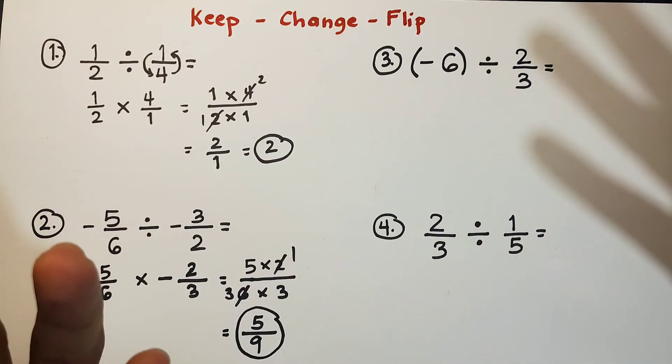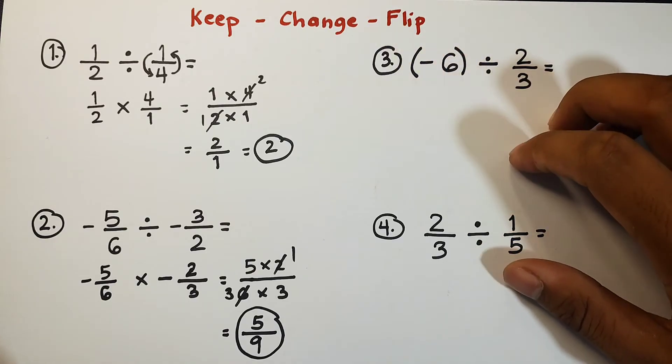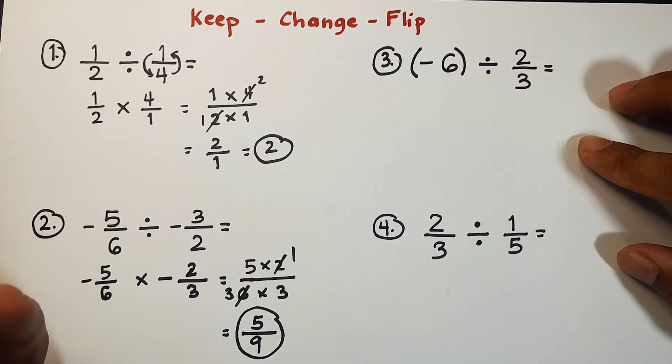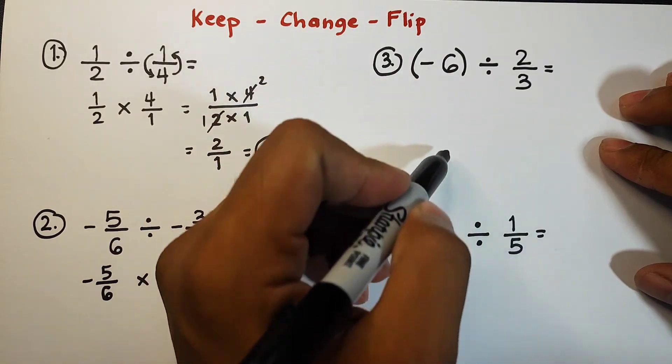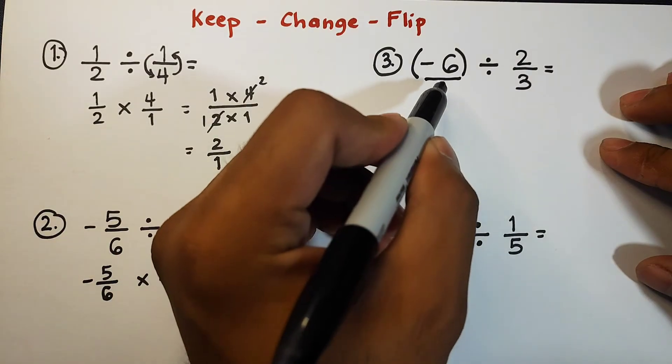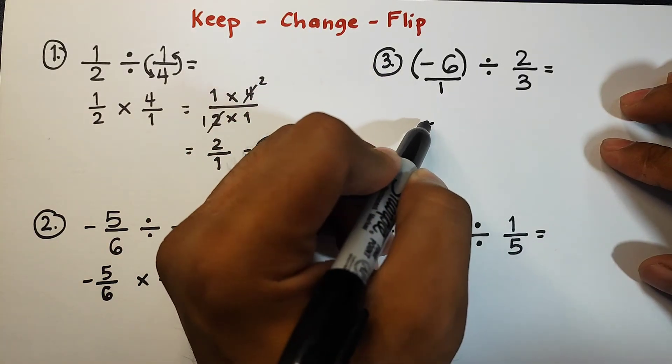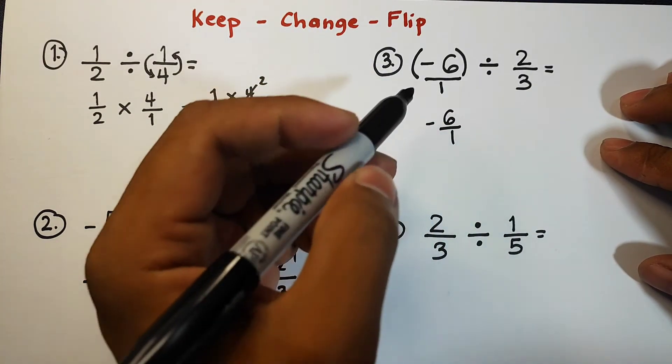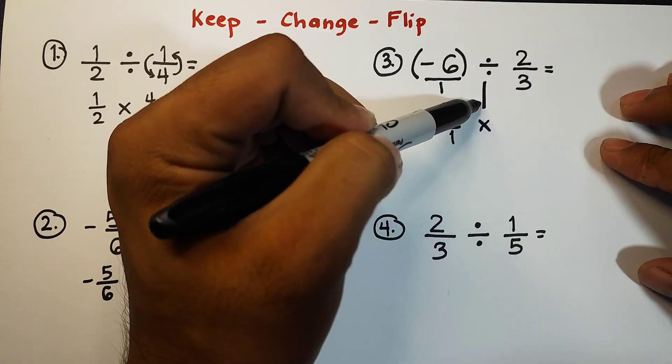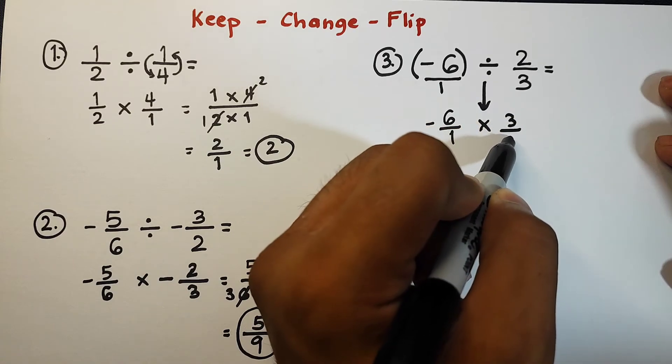So let's continue with number three. We are given here a whole number or without a denominator. We have negative six divided by two over three. So we will simply express this first into a fraction. Wherein, from negative six, it became negative six over one. So that is negative six over one. We will copy or keep, change this one to multiplication again. Then, from division, it became multiplication and flip two over three, and that is three over two.